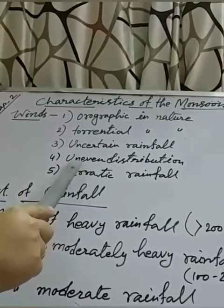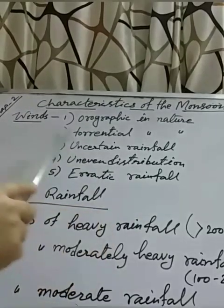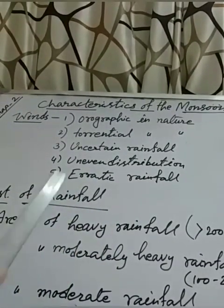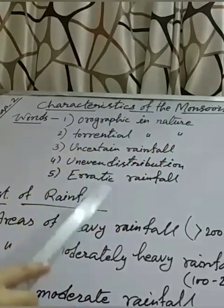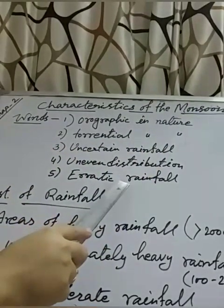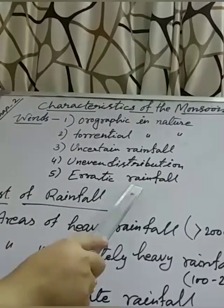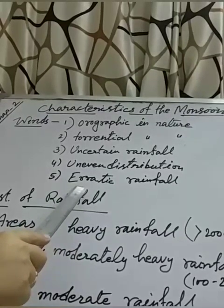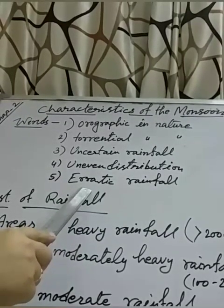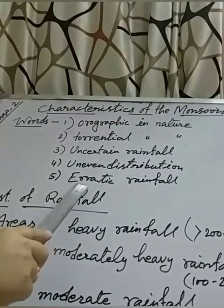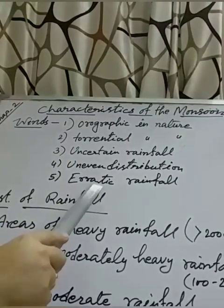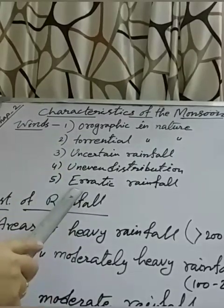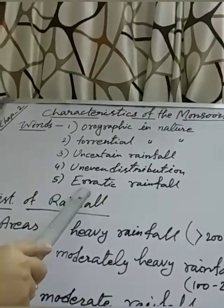The fourth characteristic is uneven distribution — the whole of India does not get the same amount of rain from this wind, so it is unevenly distributed. And the last characteristic is erratic rainfall — maximum parts of India get rain, but the amount is not the same. Some parts get huge rain, some get moderate, and some get very less rainfall. These five are the very important characteristics of monsoon wind.